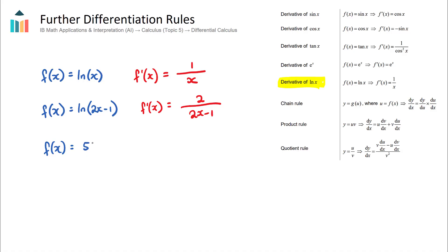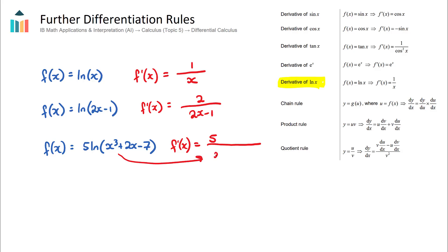One more example: if f(x) = 5·ln(x³ + 2x − 7), the derivative equals 5(3x² + 2) over (x³ + 2x − 7). The coefficient 5 stays on the numerator, whatever's inside the bracket goes on the denominator, and the derivative of the inside expression — which is 3x² + 2 — goes on the numerator.